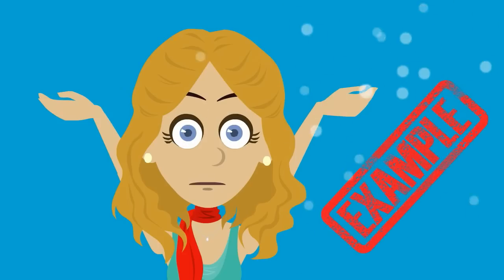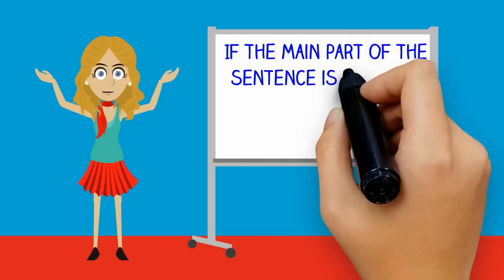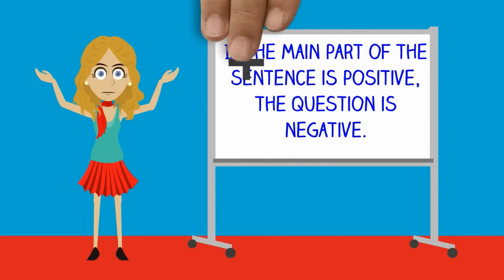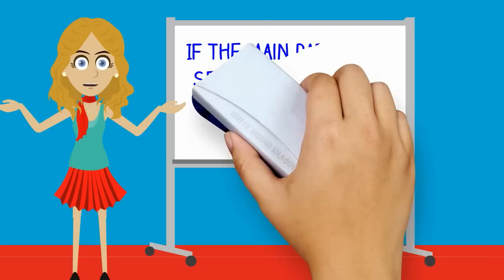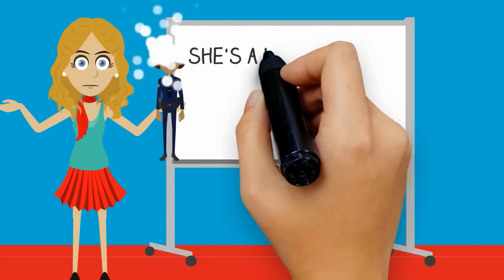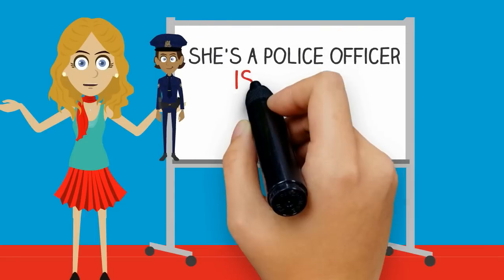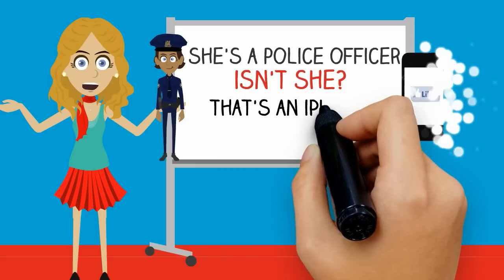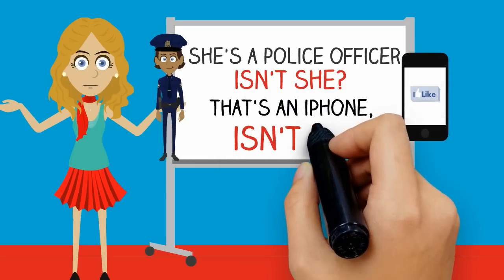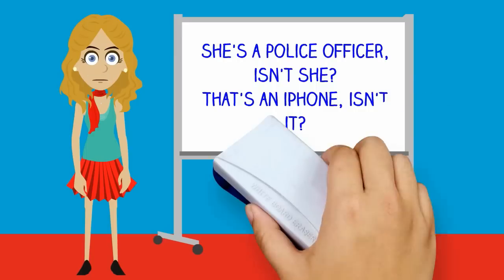For example, if the main part of the sentence is positive, the question is negative. She's a police officer, isn't she? And, that's an iPhone, isn't it?